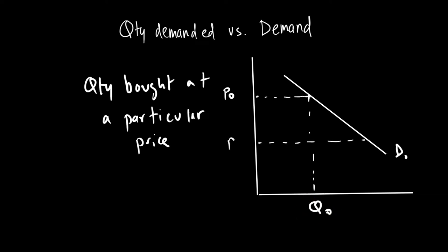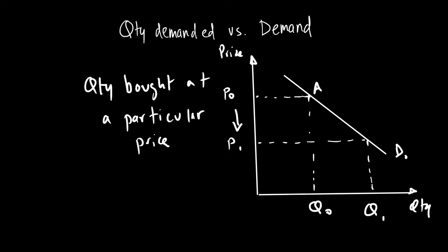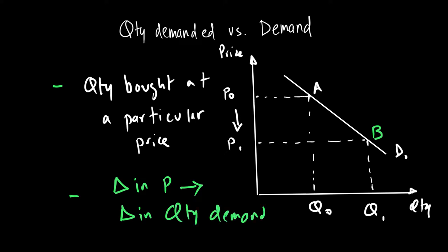On the other hand, if the price goes to P1 — the price goes down — we will say the quantity demanded has gone up. This is the demand for a particular good; let's say this is the demand for cars. When this is the demand for cars, the quantity demanded is the quantity bought at a particular price: at P0, quantity demanded is Q0, while at P1, quantity demanded is Q1. So whenever there is a change in price, there will be a change in quantity demanded — we won't say there is a change in demand.